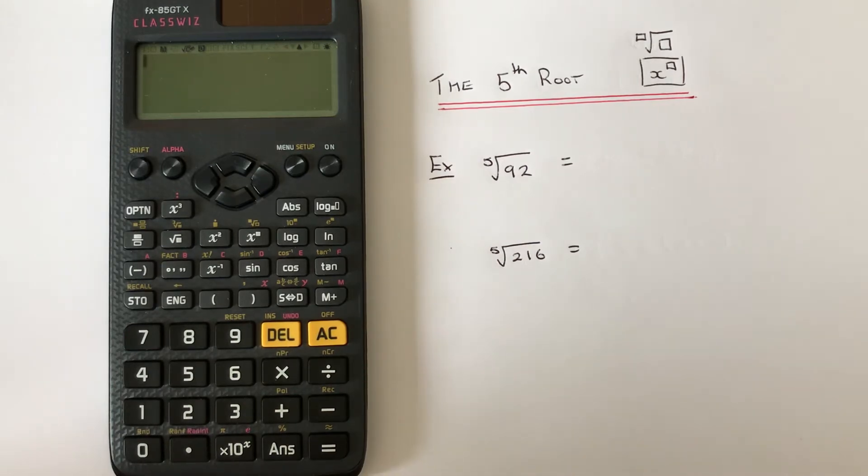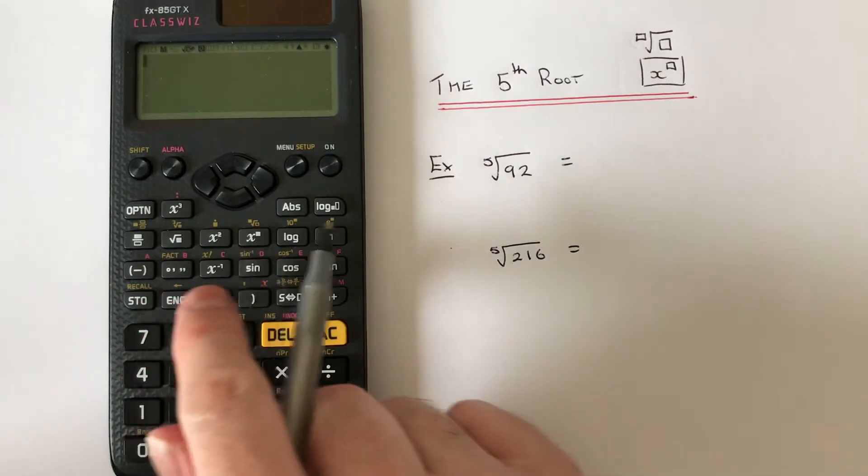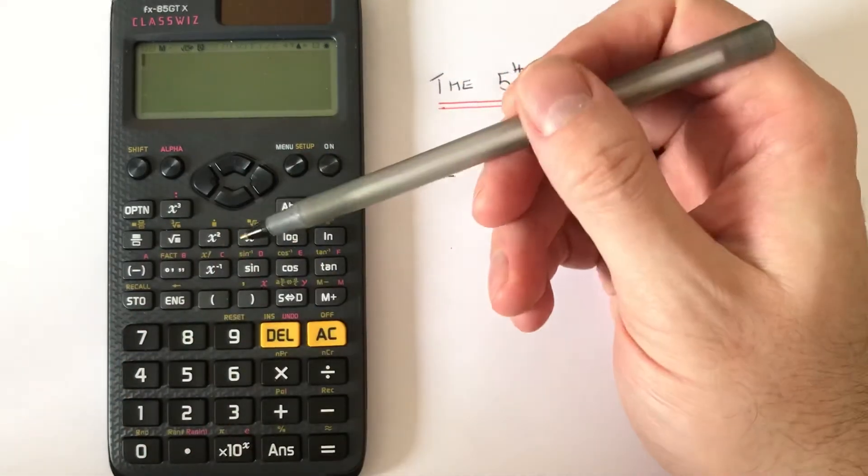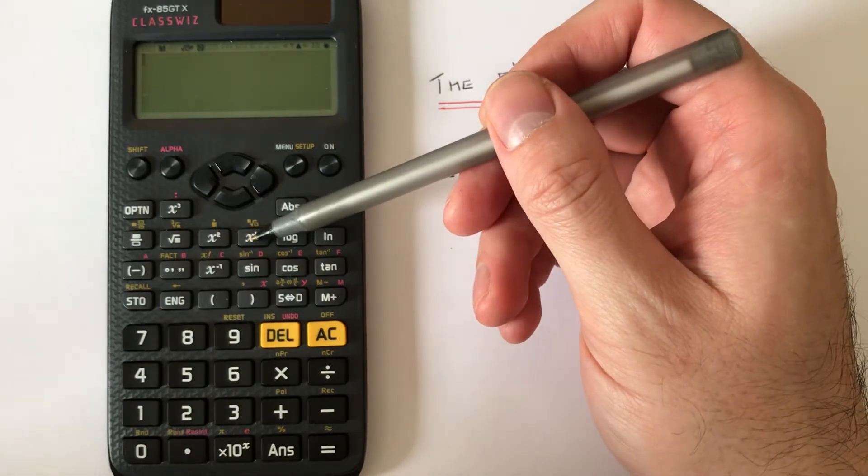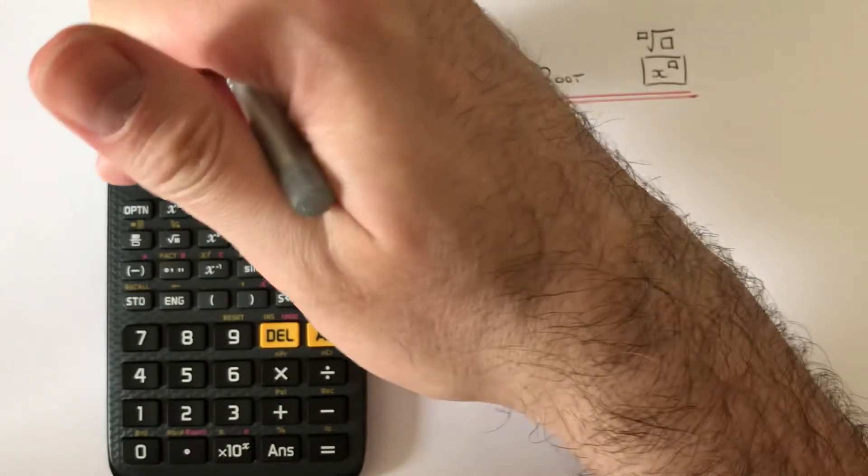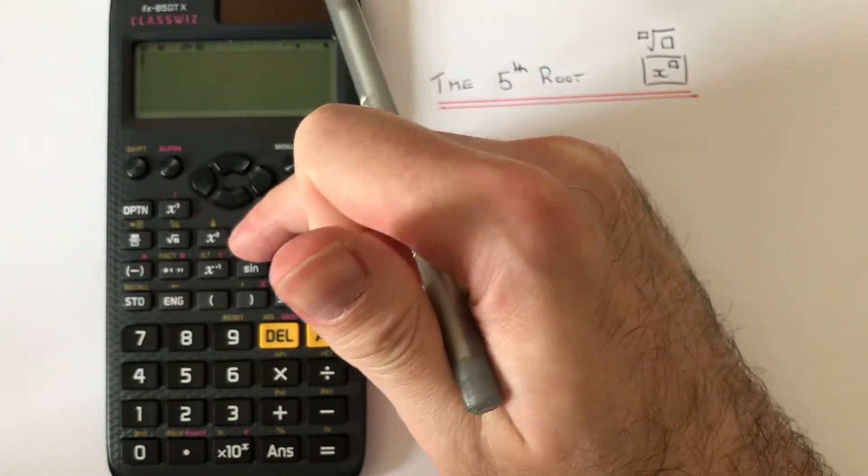To get the fifth root on your calculator, we need to locate the root key which is on the second row of the scientific functions, and we need to press shift x power.